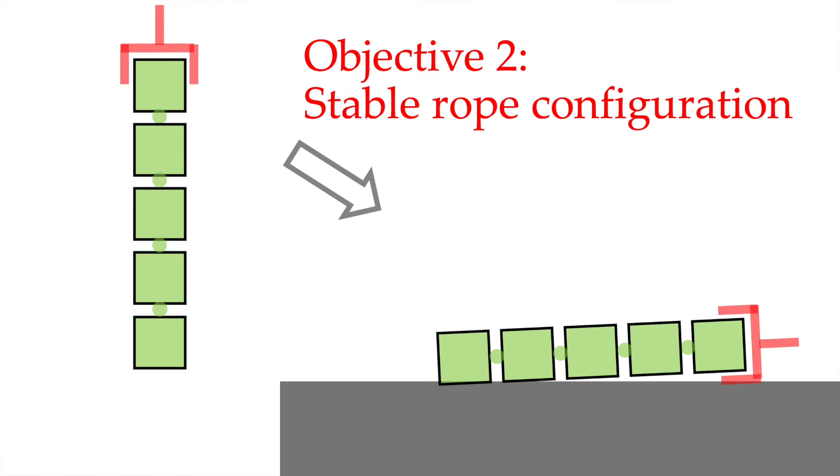The second objective is a stable rope configuration. We place this rope on the table so that the rope can be stable. We don't need to use our hand to hold the rope. We can use our hand to do future knot tying tasks and dexterous manipulation tasks.